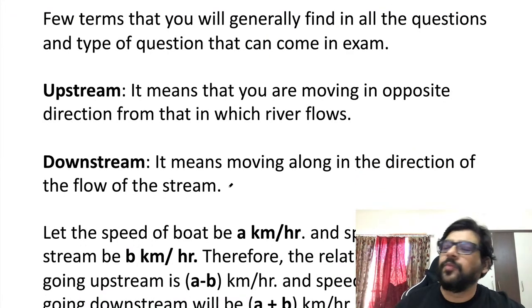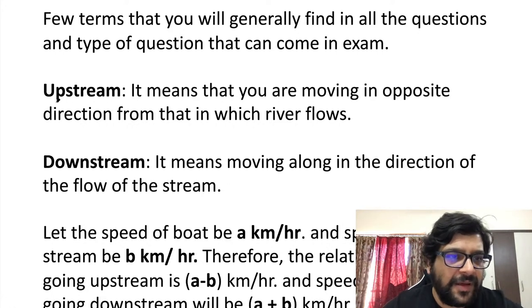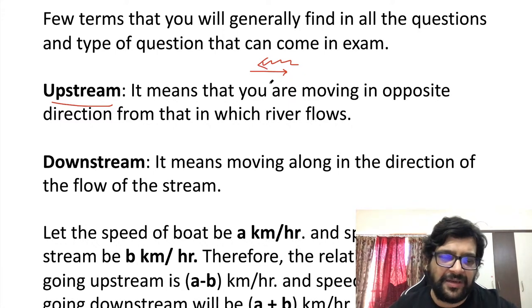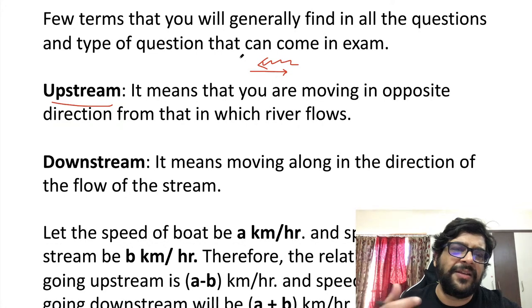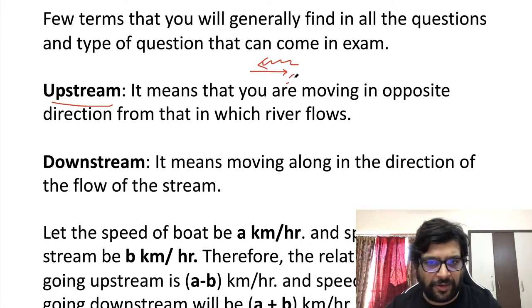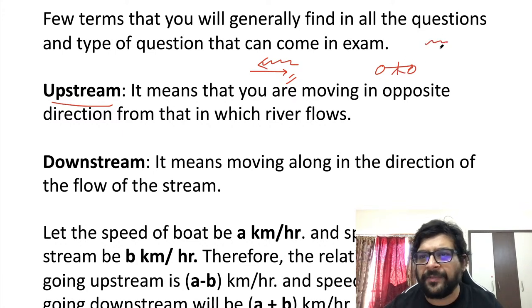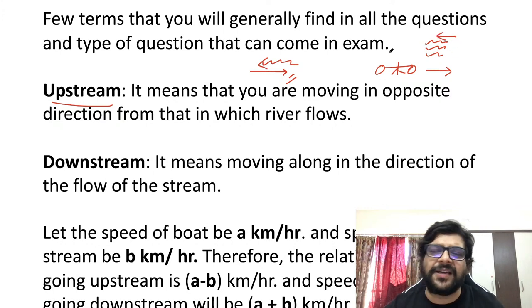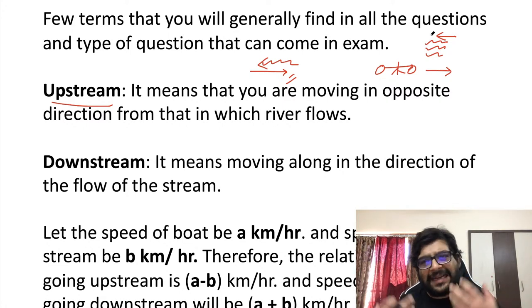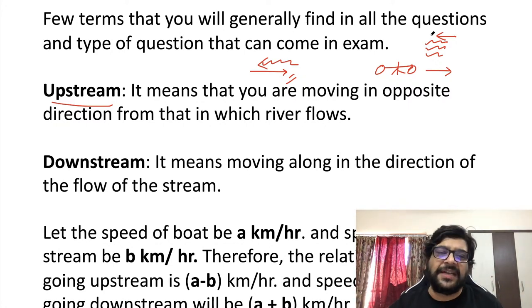First, let's define some terms. Upstream means that if the river flow is in one direction, you are going in the opposite direction — moving against the flow. This concept applies to river flows. Another case: suppose you're driving a bike and wind is blowing. If you drive opposite to the direction the wind is blowing, you are riding upstream. Basically, there is movement hindering you in some way, and because of that, you are going upstream.